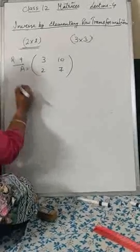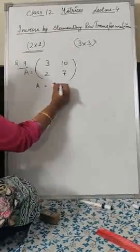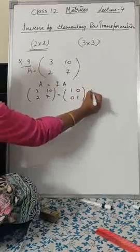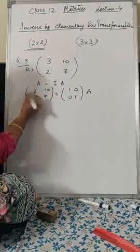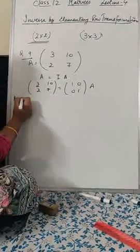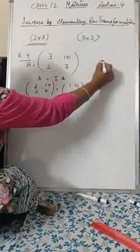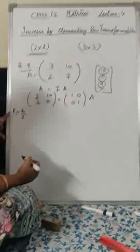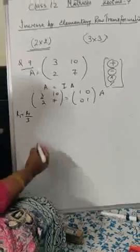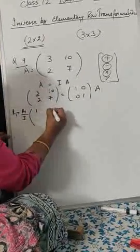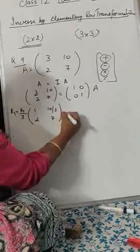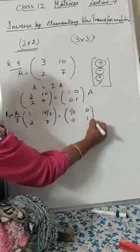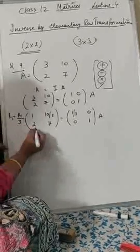Another question: A = [3, 10; 2, 7]. Find the inverse of this matrix. Write A·I: [3, 10; 2, 7] times [1, 0; 0, 1]. First step: make the (1,1) entry equal to 1. I will divide R1 by 3, so R1 → R1/3. This gives [1, 10/3; 2, 7] on the left and [1/3, 0; 0, 1] on the right. You can apply all four operations: add, subtract, multiply, divide.